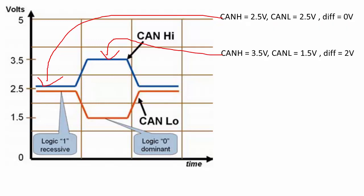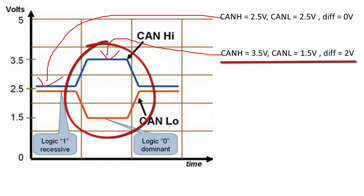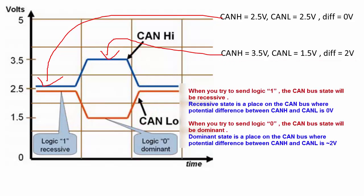That is why logical one is also called the recessive state of the CAN bus. Now, when you want to transmit logic zero, CAN-High will be at 3.5V — or whatever voltage you apply to the transceiver, basically Vcc. CAN-Low will be approximately 1.5V, so the difference is approximately 2V. This state of CAN-High is called the dominant state. So dominant is used to transmit logic zero, and recessive state is used to transmit logic one.